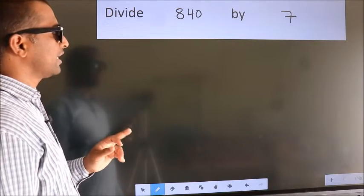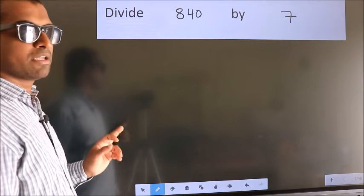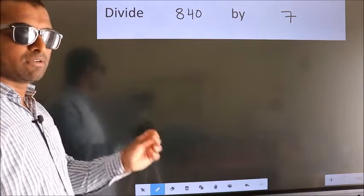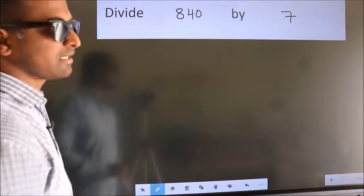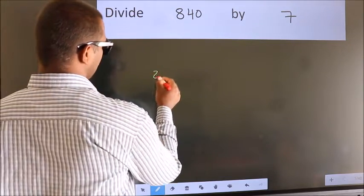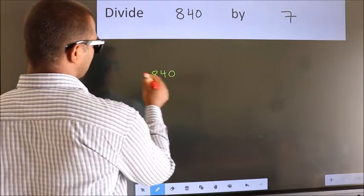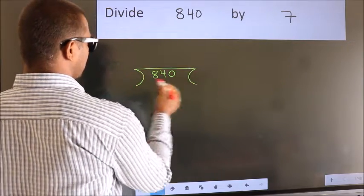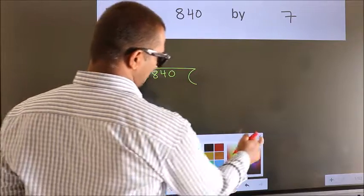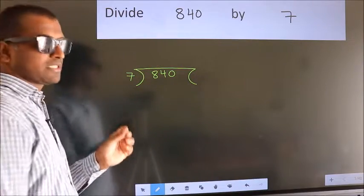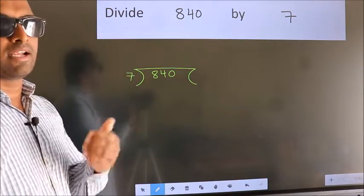Divide 840 by 7. To do this division, we should frame it in this way: 840 here, 7 here. This is your step 1.